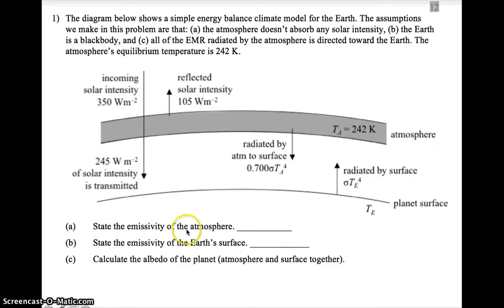Our first task is to state the emissivity of the atmosphere. There's a lot of information, so let's take a moment to look. 350 watts per meter squared is the intensity of incoming radiation. 245 is how much passes through. The rest, 105, is reflected off. And then we have 0.7 times sigma times T to the fourth. That's what the atmosphere radiates. 0.7—that right there is the emissivity of the atmosphere, because the equation is radiated intensity equals this, and the fraction out front is the emissivity. So the answer to A is 0.7.